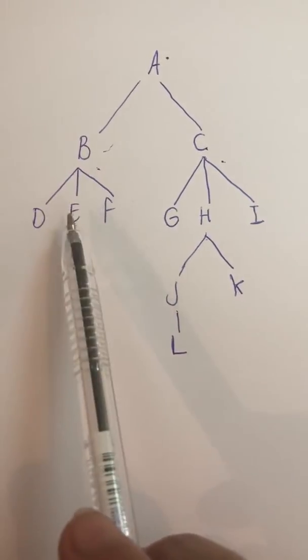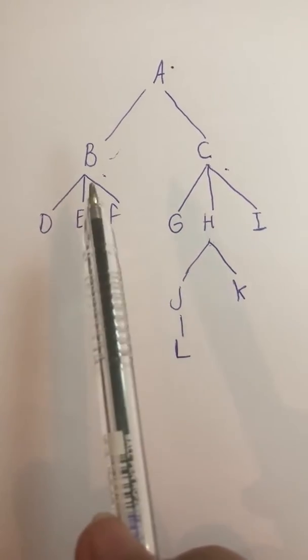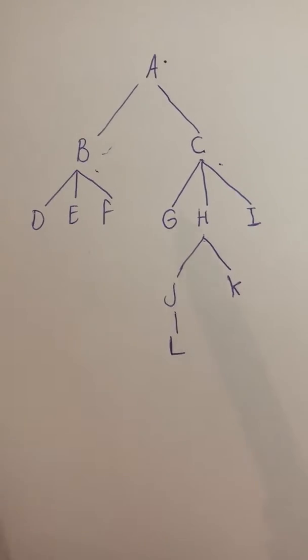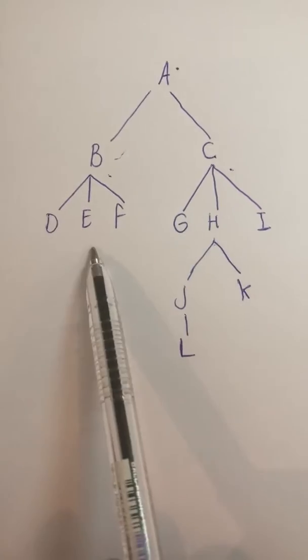Now let's come here. B is the mom of D, E, and F. So D sister precedes E. Does E sister precede F? Well, yes it does.